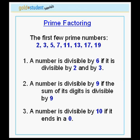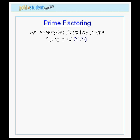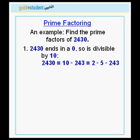Finally, a number is divisible by 10 if it ends in a 0. Let's do an example. Let's find the prime factors of the number 2,430. First of all, 2,430 ends in a 0, therefore it is divisible by 10.